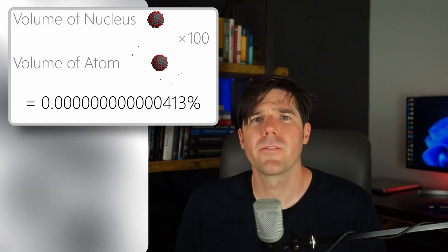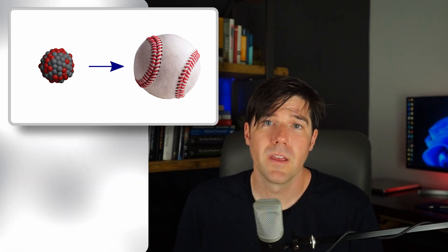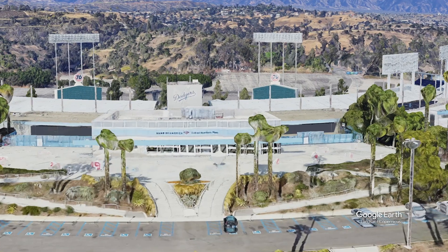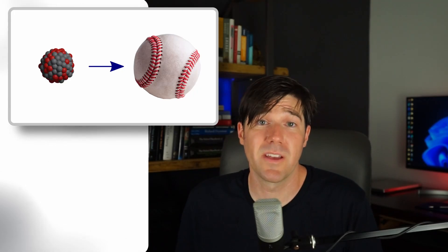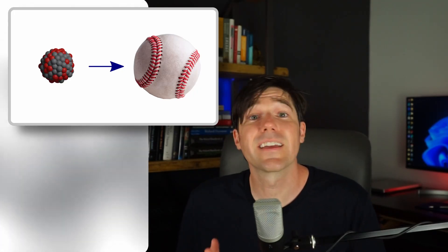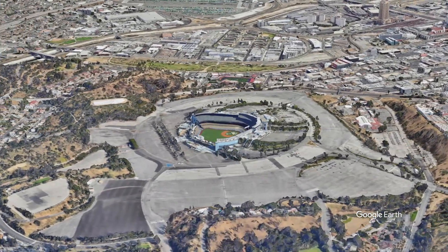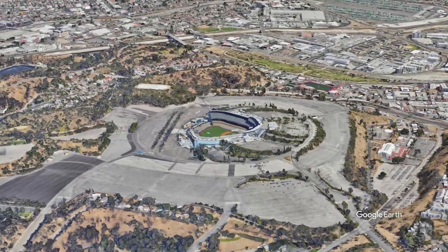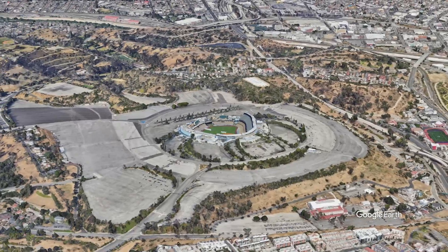Or, put it another way, let's say the nucleus of an atom is the size of a standard baseball. And we place it on the second base of, let's say, Dodger Stadium. The electron orbit around our baseball nucleus would look something like this. The electron orbit would extend way past the stadium and have a diameter of 4.6 kilometers, or just under 3 miles. Yes, all matter around us is mostly empty space.